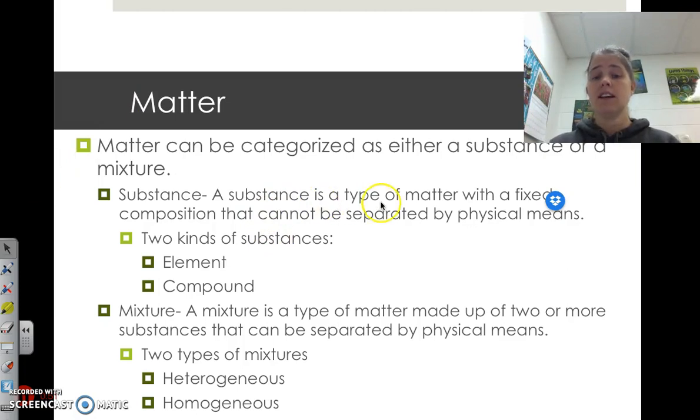If it's a substance, a substance is a type of matter with a fixed composition. That means it cannot be separated by physical means. I can't just pull you guys apart. So the two types of substances are elements and compounds, and we're going to talk about those a little bit more on the next slide.